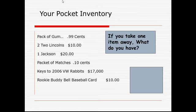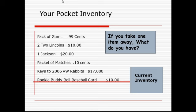In this exercise, for example, we could say we had a pack of gum worth 99 cents — two Lincolns, a $10, a one-dollar bill, $20, a pack of matches worth 10 cents, keys, a rabbit's foot valued at $17,000, and a money bill baseball card. All these things are what we would call inventory. If you take something away at another time, it would then be called a current inventory.